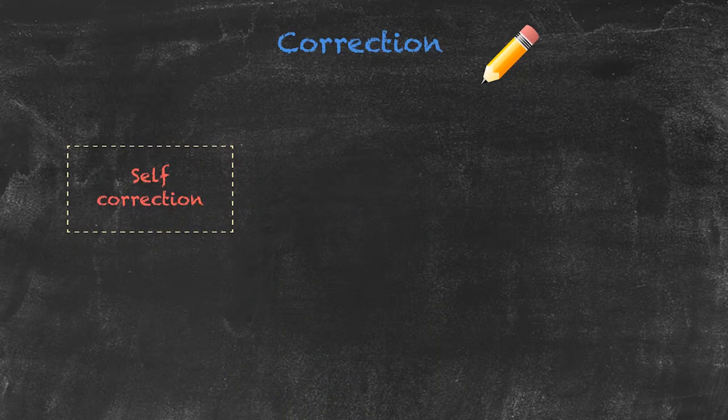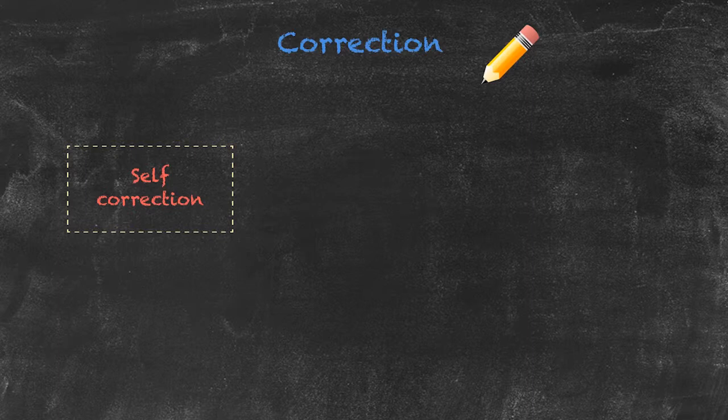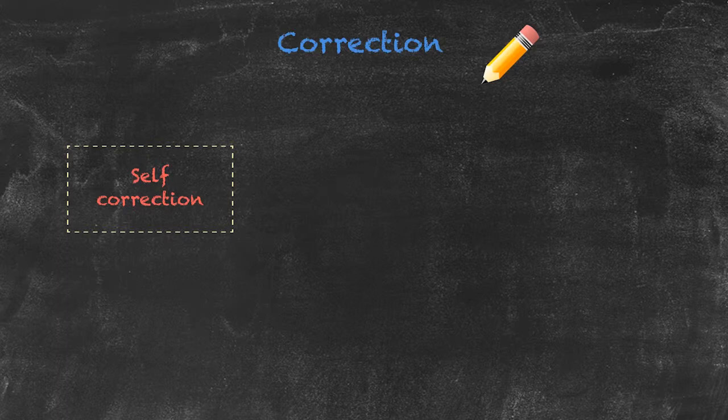We can often do this in a non-verbal way to show them that they're not actually correct. We might repeat back what they've said to us in a questioning manner, or we may just make a gesture to make sure that they understand that they're not correct. So we allow for a process of self-correction.